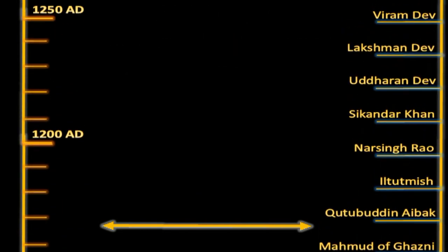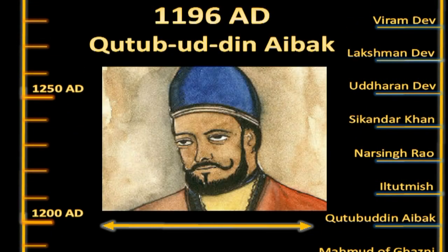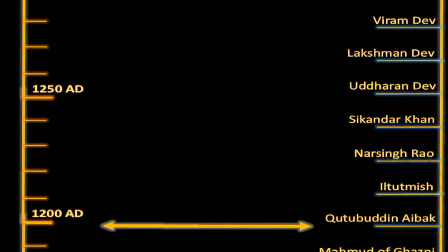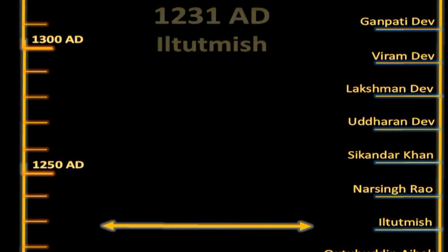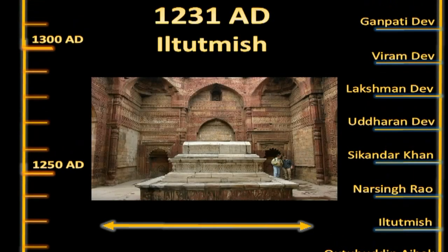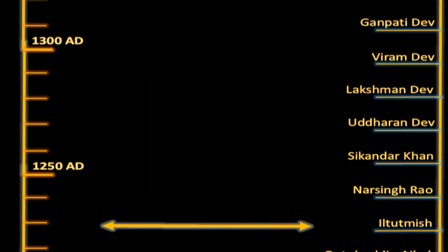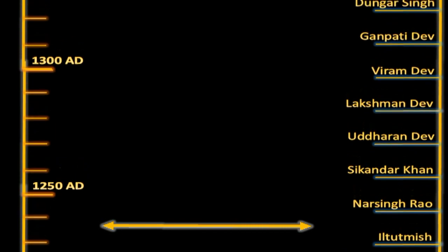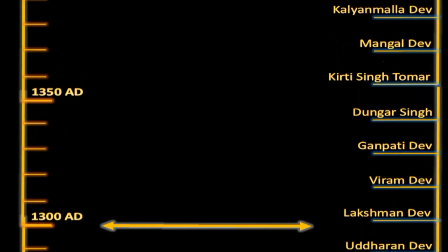In 1083 AD, Mahmud of Ghazni attacked to capture the fort but was unsuccessful. In 1196 AD, after a long siege, Qutubuddin Aibak — the first Sultan of India — took control of the fort, but lost it in 1211 AD. The fort was reconquered in 1231 AD by Sultan Iltutmish, the slave dynasty ruler of Delhi. Later, the fort was captured by Narsingh Rao and eventually went to Sikandar Khan, who continued for some time.